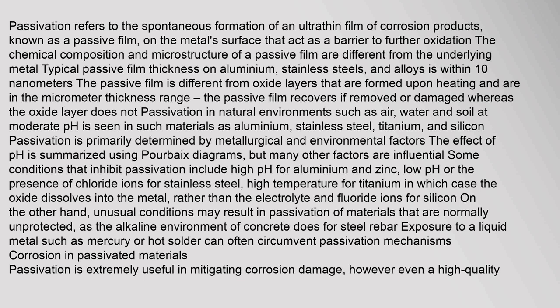The passive film recovers if removed or damaged, whereas the oxide layer does not. Passivation in natural environments such as air, water, and soil at moderate pH is seen in materials such as aluminium, stainless steel, titanium, and silicon. Passivation is primarily determined by metallurgical and environmental factors. The effect of pH is summarized using Pourbaix diagrams, but many other factors are influential. Some conditions that inhibit passivation include high pH for aluminium and zinc, low pH or the presence of chloride ions for stainless steel, and high temperature for titanium — in which case the oxide dissolves into the metal rather than the electrolyte — and fluoride ions for silicon.